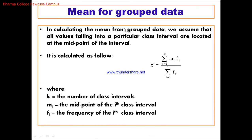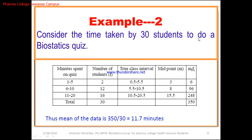Now let's see an example of the mean for grouped data. We have already seen the formula. Consider the time taken by 30 students to complete a biostatistics quiz exam. From 1 to 5 minutes, 2 students completed the quiz. From 6 to 10 minutes, 12 students completed it. From 11 to 20 minutes, 16 students completed the exam. Totally, 30 students have taken the exam.